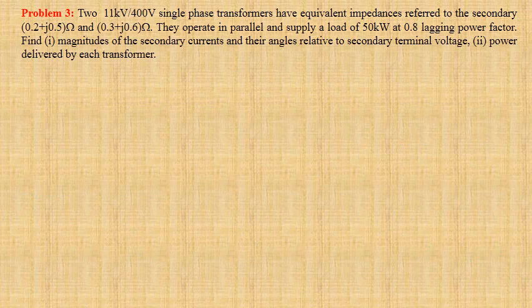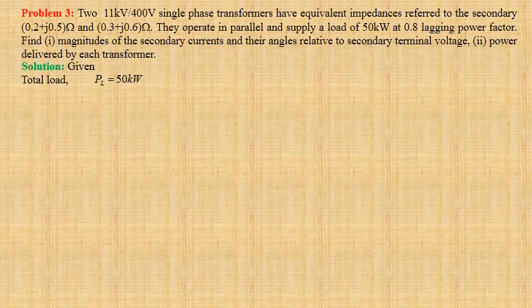Two 11 kV by 400 volt single-phase transformers have equivalent impedances referred to the secondary side of 0.2 plus J0.5 ohm and 0.3 plus J0.6 ohm. They operate in parallel and supply a load of 50 kilo watt at 0.8 lagging power factor. We have to determine the magnitudes of the secondary currents and their angles relative to secondary terminal voltage, and also the power delivered by each transformer. Total load PL equals 50 kilo watt. Load power factor cos phi L equals 0.8 lagging.